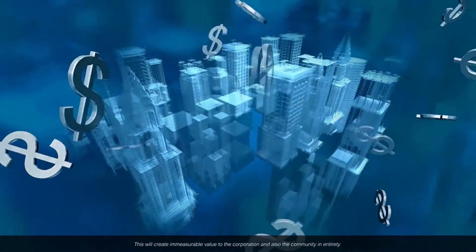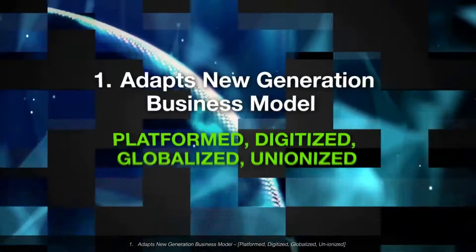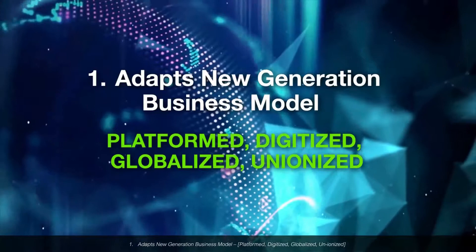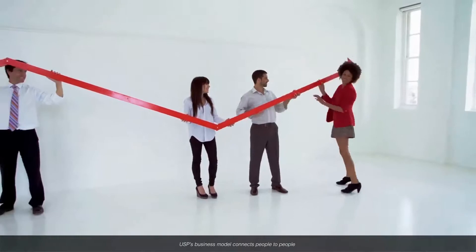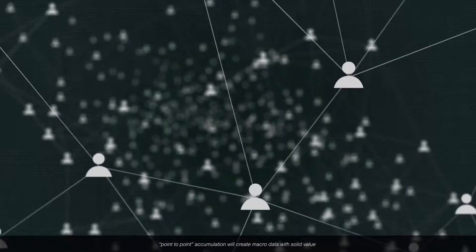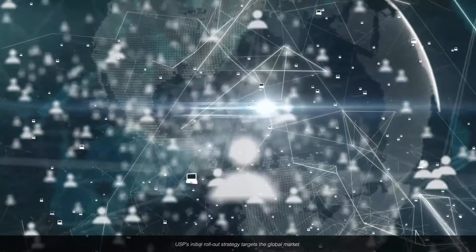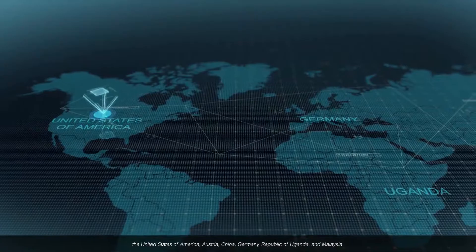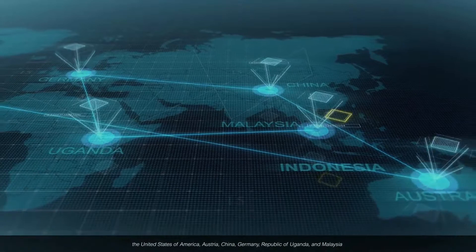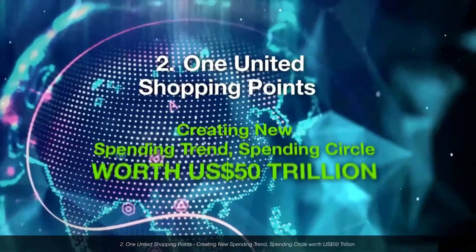USP's three major features: one — adapt new generation business model: platformed, digitized, globalized, unionized. USP's business model connects people to people; point-to-point accumulation will create macro data with solid value. USP's initial rollout strategy targets the global market. Joined alliances include countries such as the United States, Austria, China, Germany, Republic of Uganda, and Malaysia. The company headquarters is based in Jakarta, Indonesia.